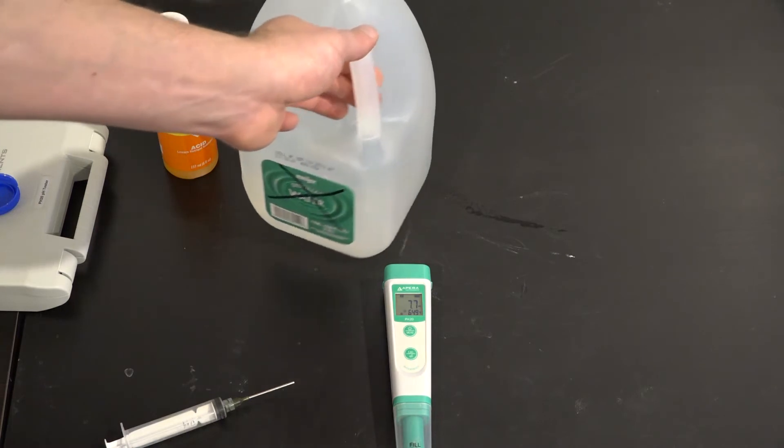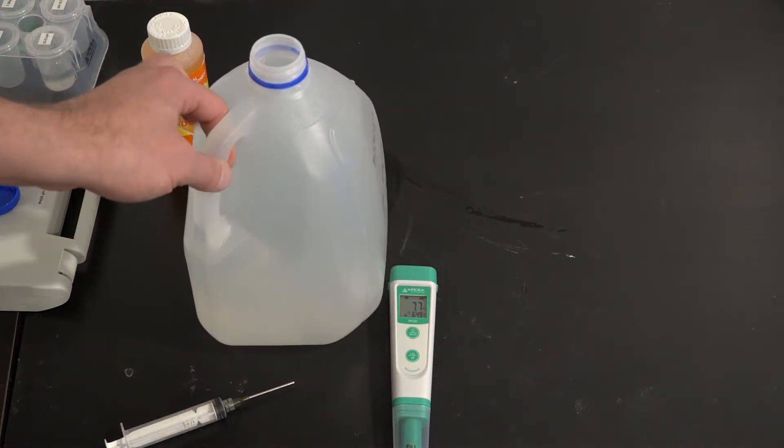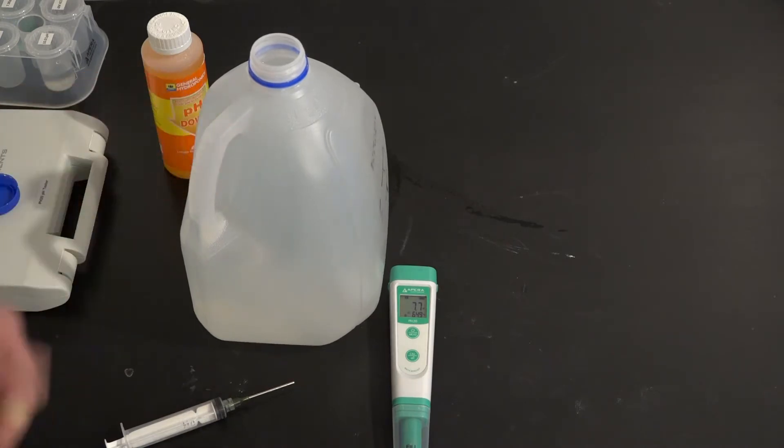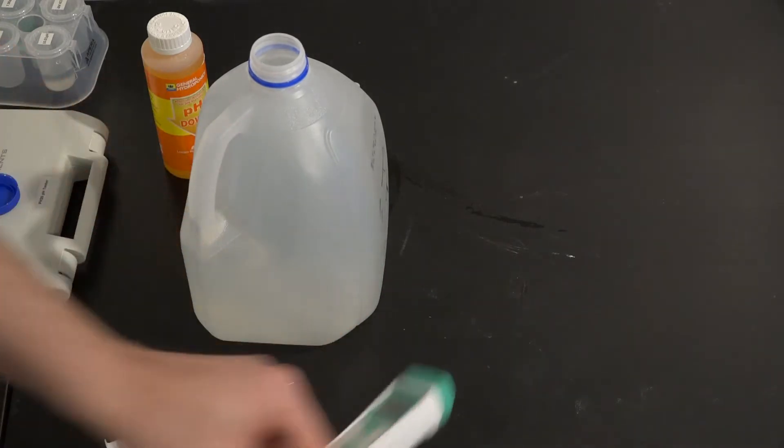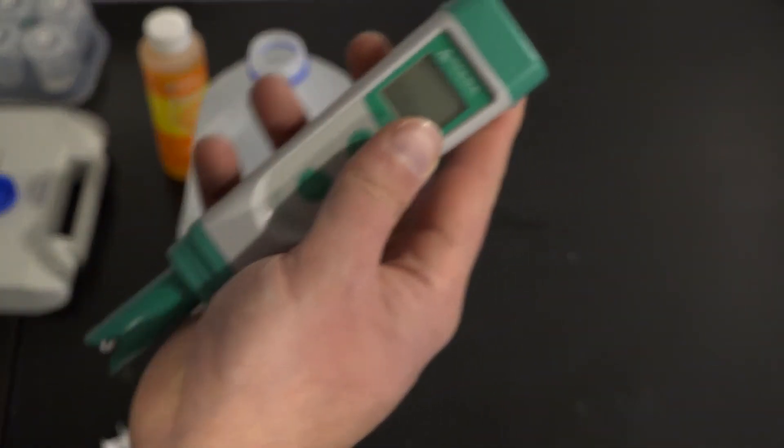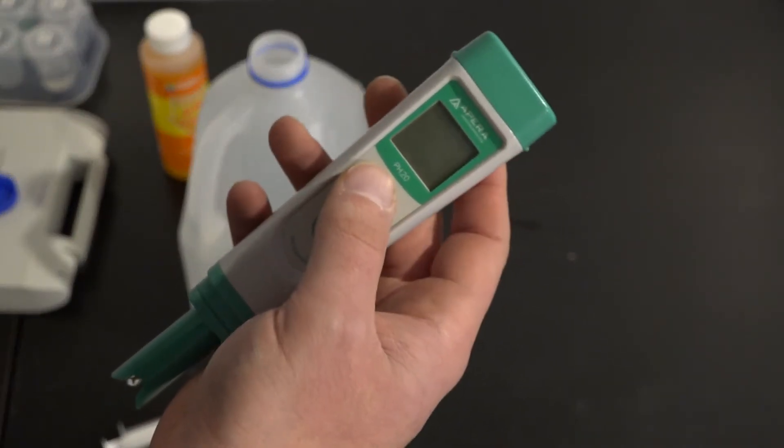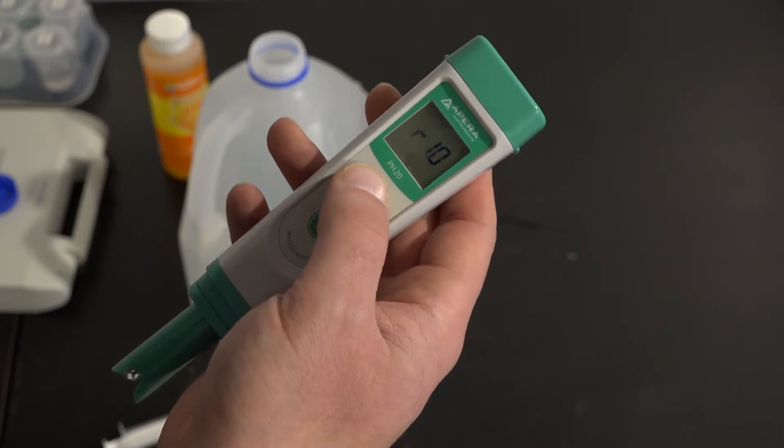Now, this is a one-gallon container. I like to do this in one-gallon containers simply because it's easier. Now, I will take my pH pen. It's an Apera Instruments. I'm going to turn it on, press and hold the power button.